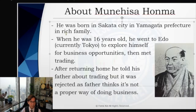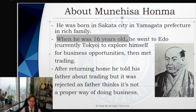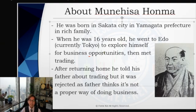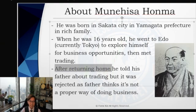Coming back to the main topic: he was born in a rich family. When he was 16 years old, he went to Edo — which is currently Tokyo — to explore business opportunities, and there he met trading. His father was a very famous businessman back then and was wealthy. Honma went to Edo to study business in general, but there he discovered trading. After returning home, he told his father about trading, but it was rejected — his father thought it was not a proper way of doing business.